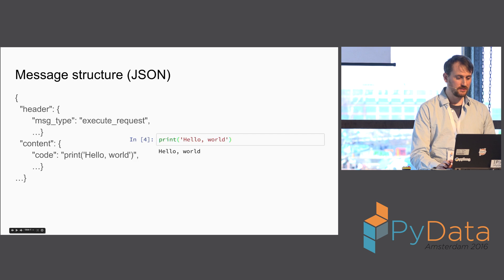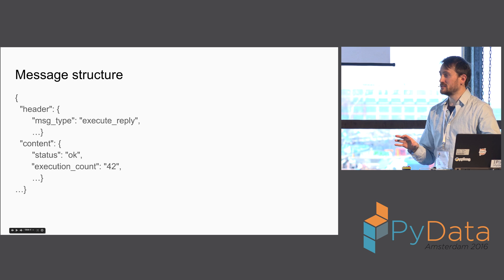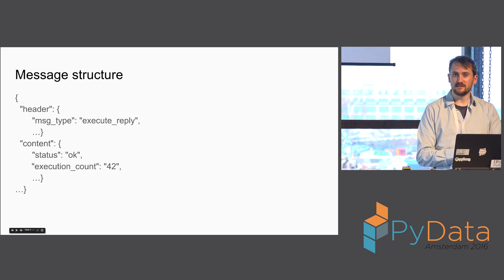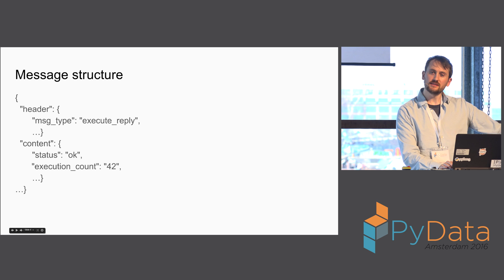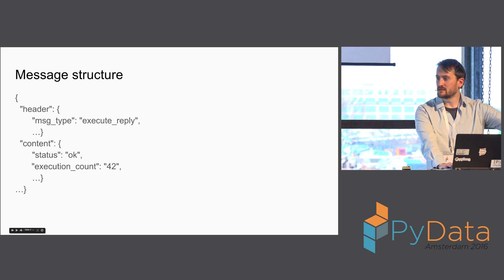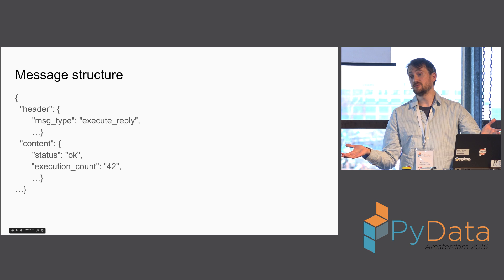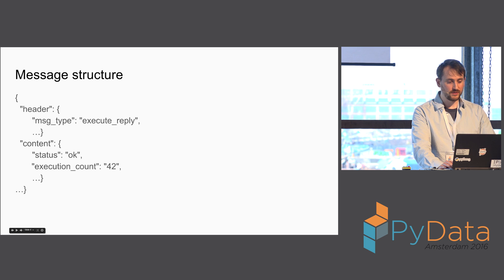Once you've submitted this execution, you get a reply that says it worked, here's the prompt number that we put in the little in and out boxes. If it didn't work, you'll get a traceback. That comes back on the same socket — you submitted a request and you get a reply straight back. And there's a side channel called IOPub where outputs happen. These happen on a different socket — a 0MQ publisher socket — so it's actually broadcast to everything connected to the kernel. They all get the same outputs.